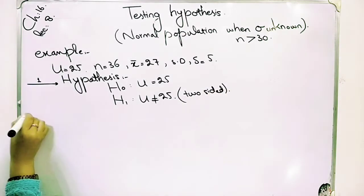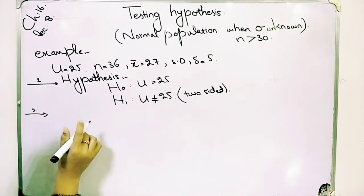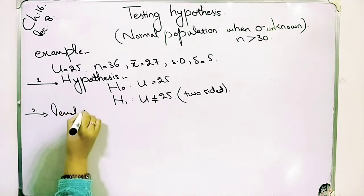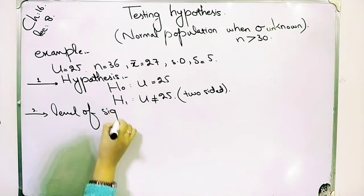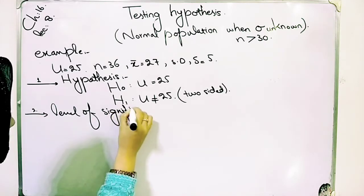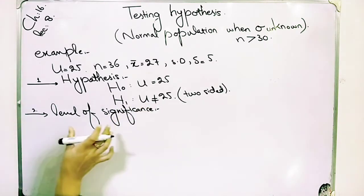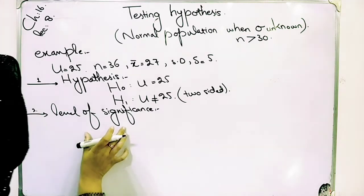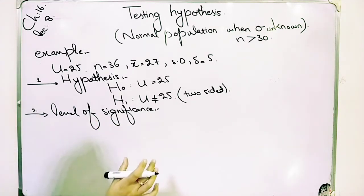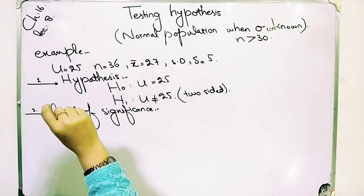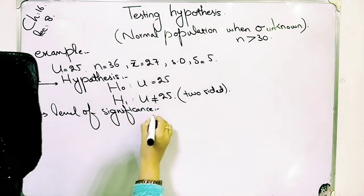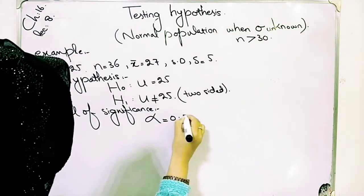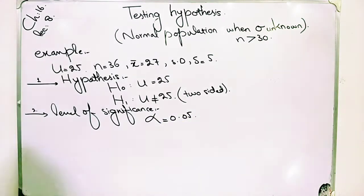Step 2: Level of significance. In this question the level of significance is not explicitly mentioned. As I have told you, when the level of significance is not given in the question, we take alpha = 0.05. So let us specify the level of significance at 0.05.